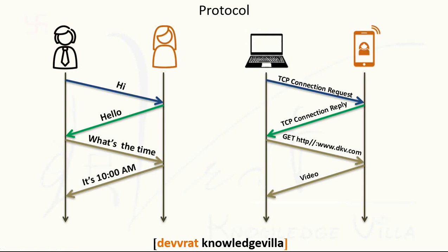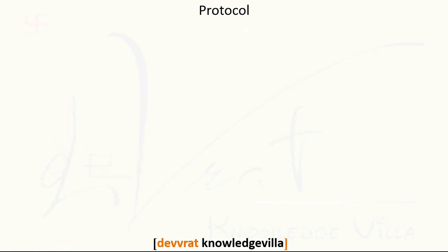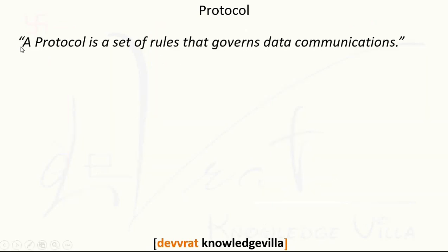Now we are going to define protocol. After viewing this example, I hope you will be able to understand the definition of protocol. We can say that a protocol is a set of rules that governs data communication — it allows data communication in a computer network.